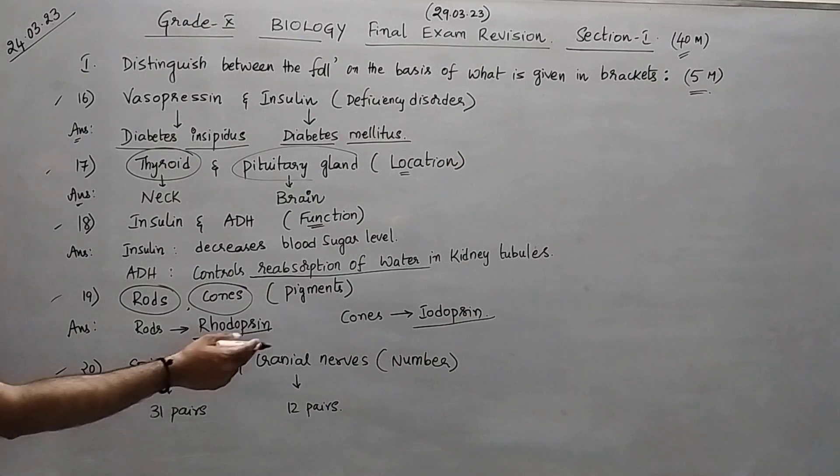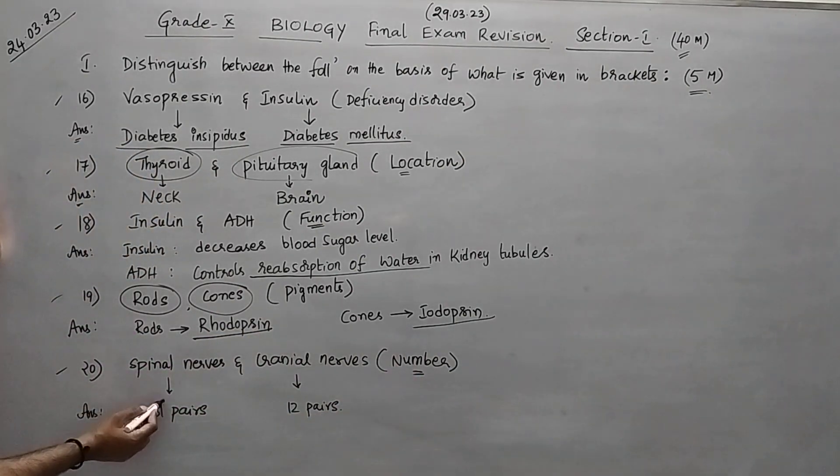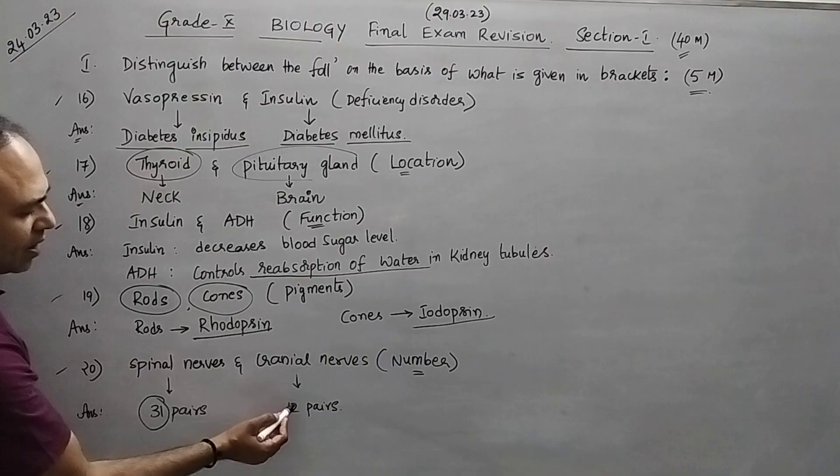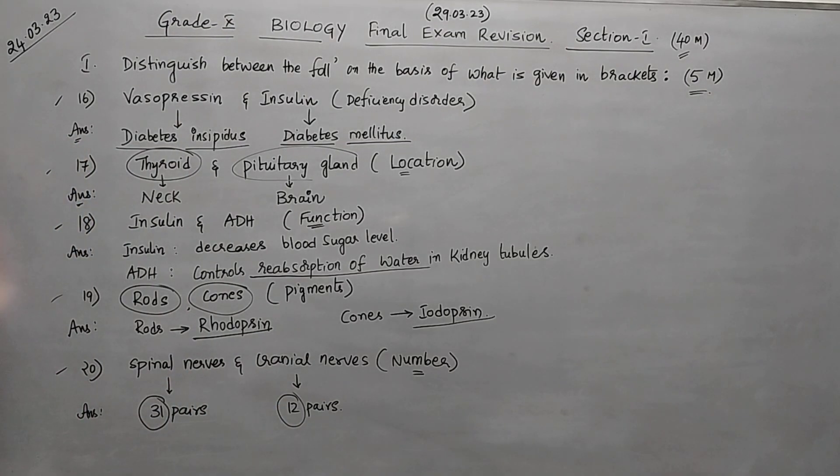Spinal nerves and cranial nerves - what is the number? Spinal 31 pairs, cranial 12 pairs. Hope you have understood this, so practice these 20 questions. Thank you so much.